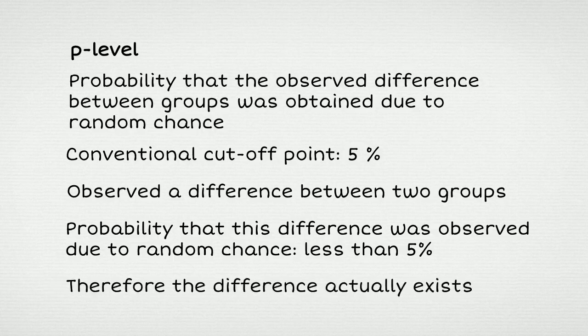And you say, look, there is a difference between the two groups. However, if you observe a certain difference, but your estimate of the probability that this difference was observed by random chance is larger than 5%, then you conclude that the difference is not statistically significant. In other words, you have to conclude that there is no difference between the two groups.